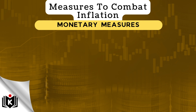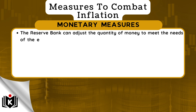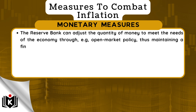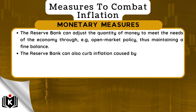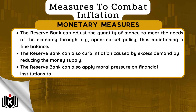The country's reserve bank and the government can also apply certain monetary measures to curb inflation, including the following. The reserve bank can adjust the quantity of money to meet the needs of the economy through, for example, open market policy, thus maintaining a fine balance. The reserve bank can also curb inflation caused by excess demand by reducing the money supply. The reserve bank can also apply moral pressure on financial institutions to be more careful when granting credit.